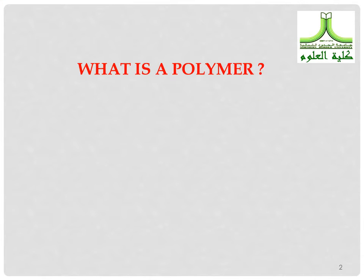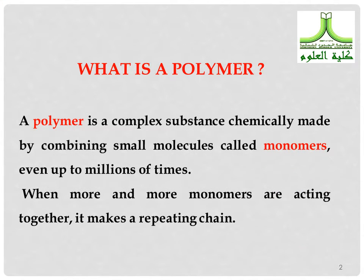What's a polymer? A polymer is a complex substance chemically made by combining small molecules called monomers, even up to millions of times. When more and more monomers are acting together, it makes a repeating chain.